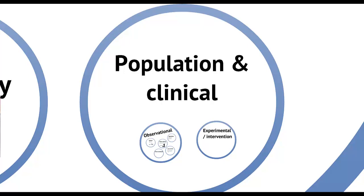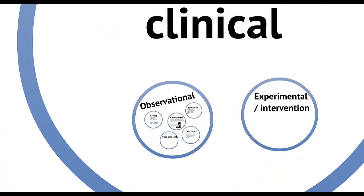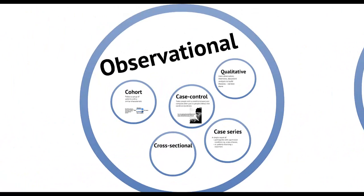We can divide population or clinical research into that which is observational, where we just watch patients, and that which is experimental, where we intervene in some way. Observational studies include cohort, case control, cross-sectional, case series, and qualitative studies.